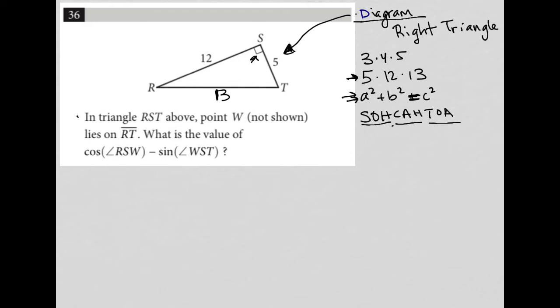So the information we're provided here says in triangle RST above, point W, not shown, lies on RT. So I'm going to put point W right there, knowing that it doesn't necessarily have to be there, but it's somewhere on that line.